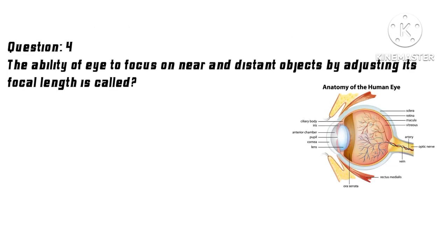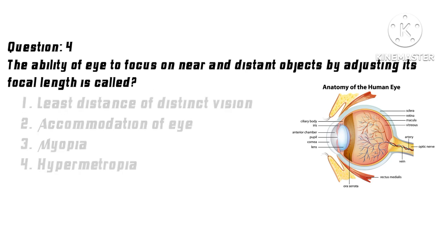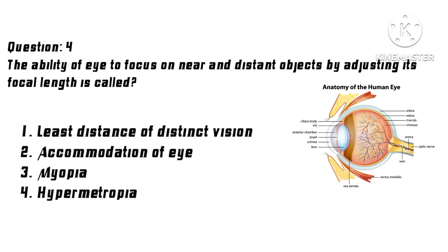Question 4: The ability of the eye to focus on near and distant objects by adjusting its focal length is called? Options: 1. Least distance of distinct vision, 2. Accommodation of eye, 3. Myopia, 4. Hypermetropia.